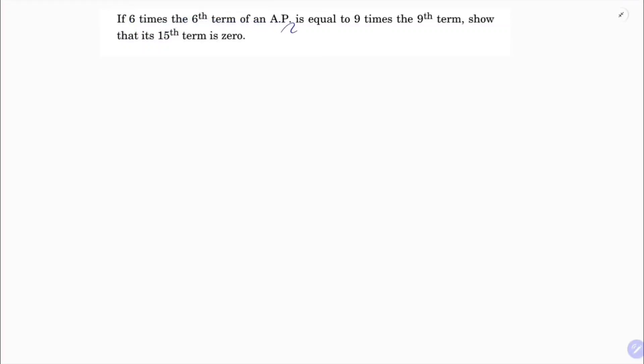If 6 times the 6th term of an AP is equal to 9 times the 9th term, show that its 15th term is 0. So here 6 times the 6th term, 6 times the 6th term of an AP equals 9 times the 9th term.